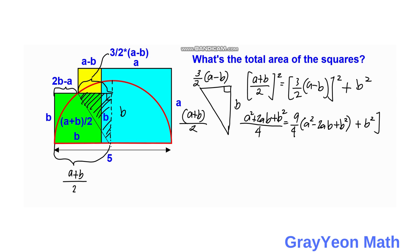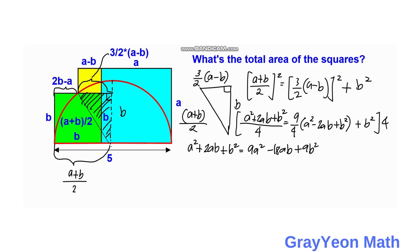Multiplying the whole equation by 4: a² + 2ab + b² equals 9a² minus 18ab + 9b² + 4b².